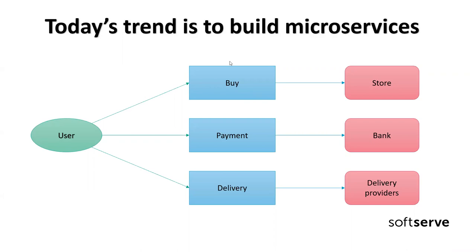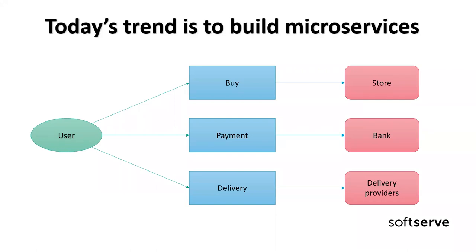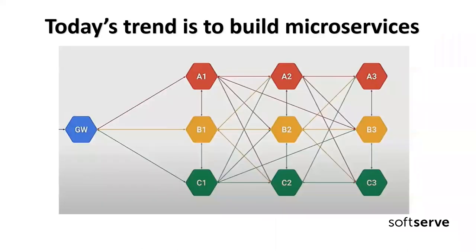If the user wants to buy something, he needs to pay for it and talks to a payment service. When the user makes a purchase, he needs to deliver it and talks to a delivery service, which then talks to delivery providers. This is a pretty simple solution, but we can have a more complex context with a lot of microservices talking to one another.